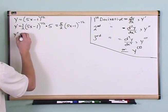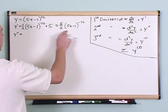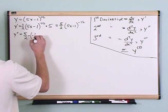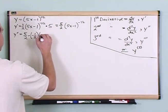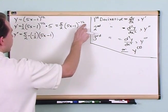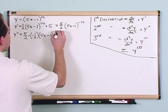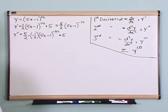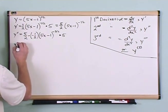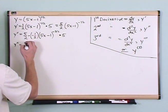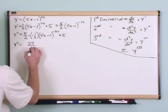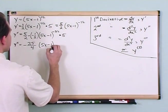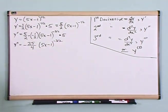Let's find the second derivative — that's the derivative of the first derivative term. We have 5/2 times negative 1/2: inside stays the same as (5x minus 1), we subtract 1 from the exponent giving negative 3/2, and we multiply by the derivative of the inside which is 5 again. So the second derivative is negative 25/4 times (5x minus 1) to the negative 3/2.